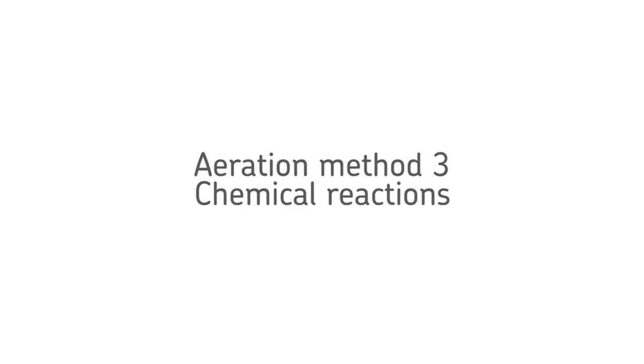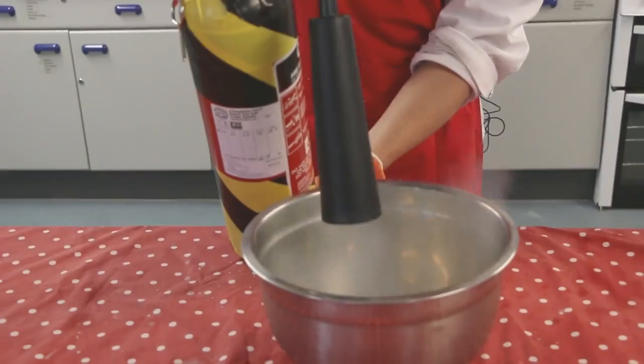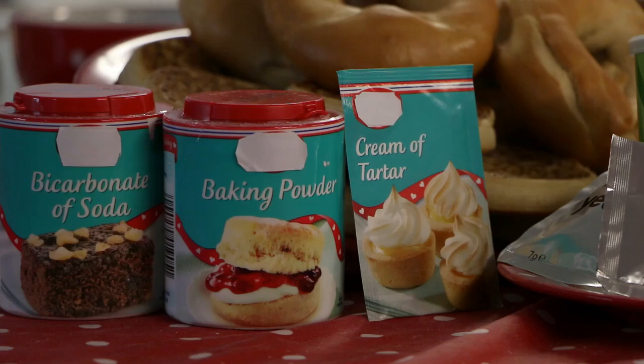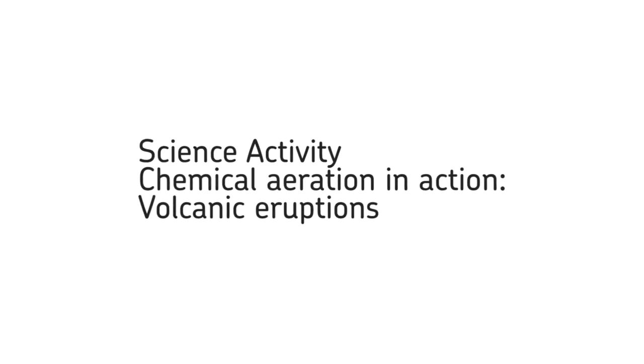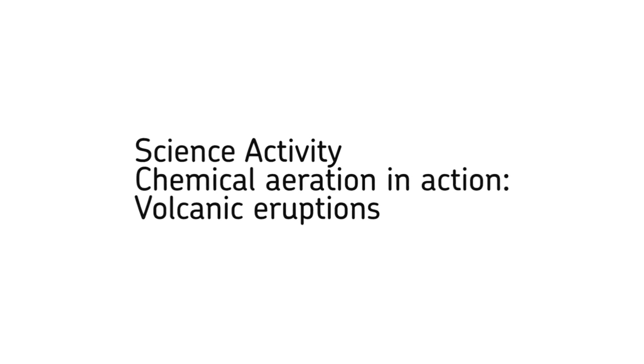The gas carbon dioxide can also be added to our food by chemical reactions using an acid and an alkaline — or as you might know it, bicarbonate of soda or baking powder and cream of tartar. We can demonstrate the acid and alkaline working together with a quick little experiment called volcanic eruptions.